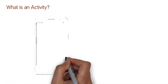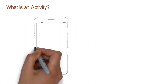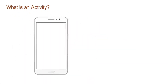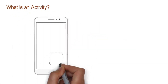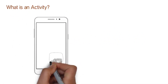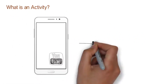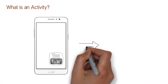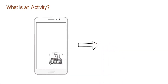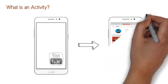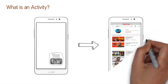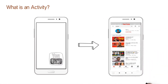There are three applications in a mobile phone. There is an application called YouTube. If you click on the YouTube icon, you click on the home page and the screen. This page is called the activity. There are activities in one application.